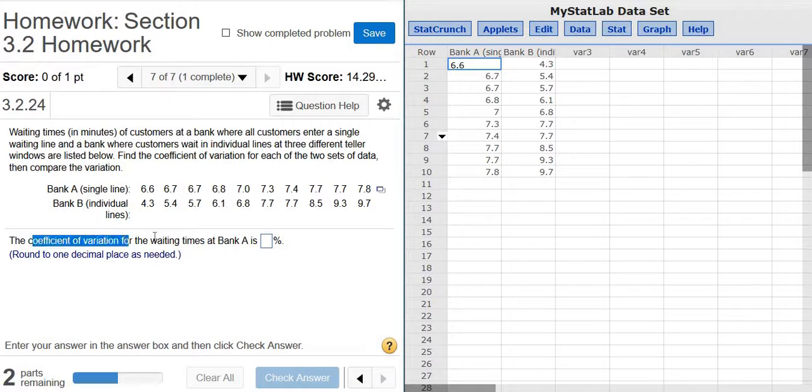We're asked to compute the coefficient of variation. The coefficient of variation is a percentage, and the bigger the percentage, the more the data vary.